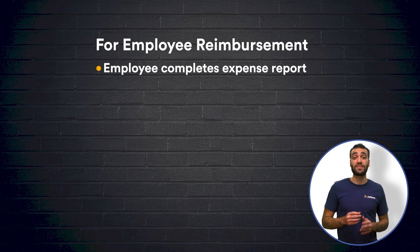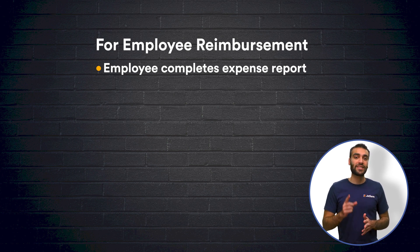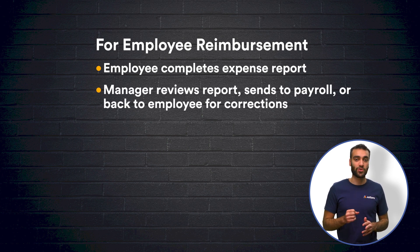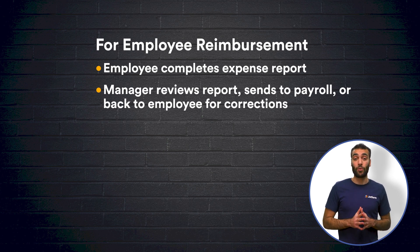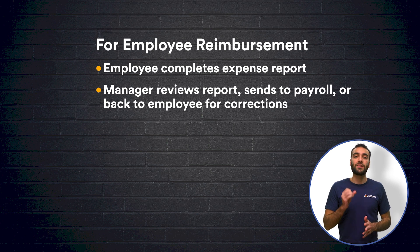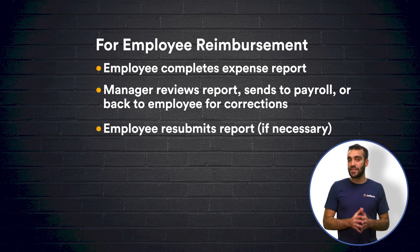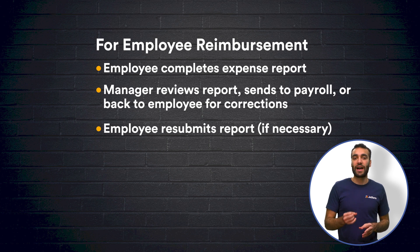First, the employee completes an expense report, scans receipts, and emails everything to their manager. Second, the manager reviews the expense report, checks the receipts, and forwards the email to payroll. However, if the manager doesn't approve the expenses, the manager emails the employee requesting that they remedy the report. The employee then resubmits the expense report, and once the manager approves the revised expense report, they can send it to payroll.